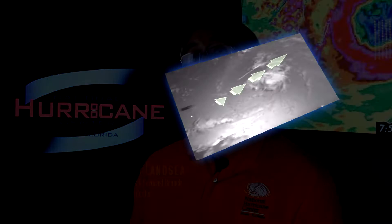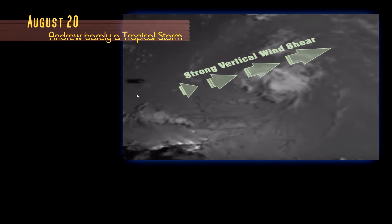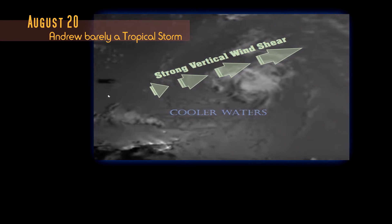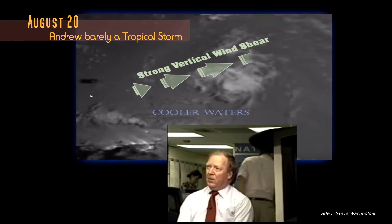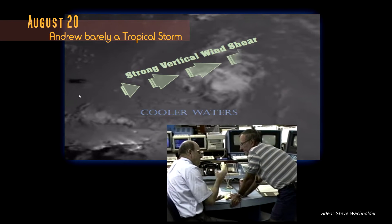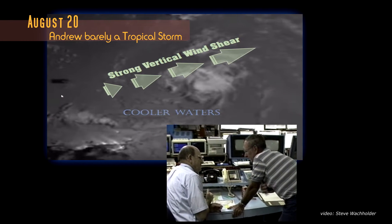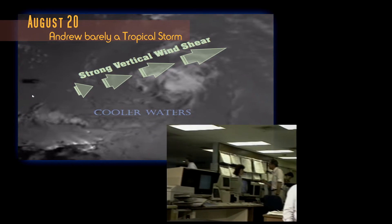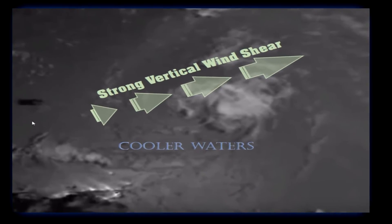When it first developed in August 1992, it looked like it wasn't going to last very long. It formed east of the Lesser Antilles and it was falling apart — getting sheared — which is one of the characteristics of El Niño: it causes more of that wind shear that tears apart storms. At one point, the National Hurricane Center and director Bob Sheets were thinking about discontinuing advisories on Andrew; they thought it had basically died. But they held on for an extra six or twelve hours, and then it started coming back to life.